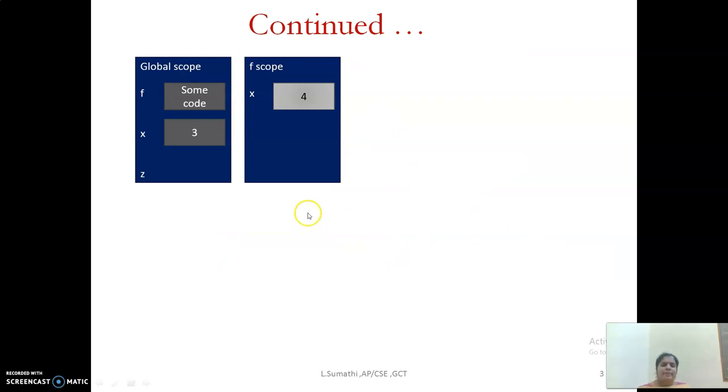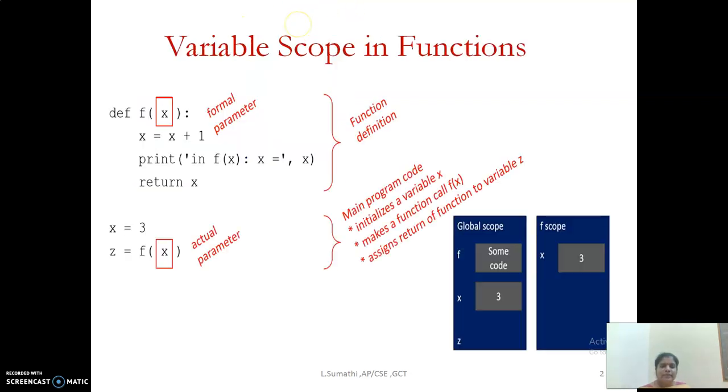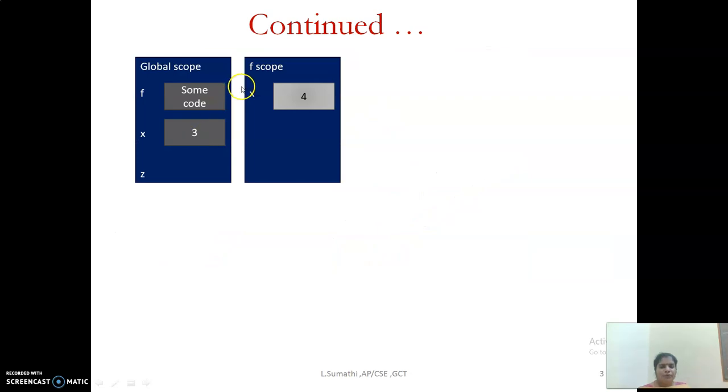Now what happens? When I invoke the function f(x), it will go for the function, and in the function statement I have incremented the value by 1. So now the x value will become 4. See, here I have incremented the value by 1. So the 3 will now change to 4.